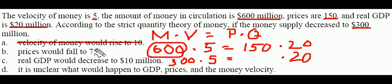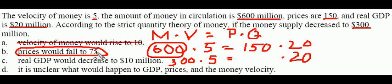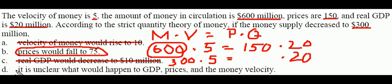That something would be a reduction in the price level, falling to $75. C says real GDP would decrease to $10 million — we can safely eliminate that because the strict quantity theory of money holds that changes in the money supply don't have any impact on real GDP. And D isn't correct either, because it says it's unclear what would happen to GDP, prices, and money velocity — we've just established that it is very clear that prices would actually fall to $75.